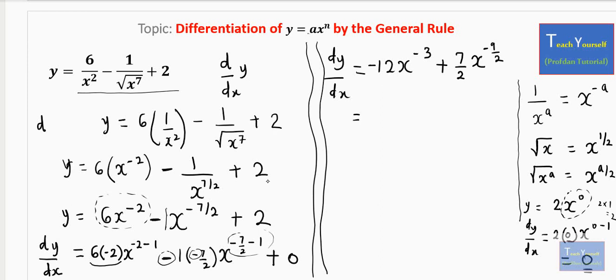And finally, you can rewrite this if you wish as minus 12 over x raised to power 3, plus 7 over 2 into x raised to power minus 9 over 2, which is a negative power. Remember, it's the same thing as 1 over x raised to power 9 over 2.